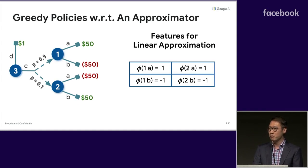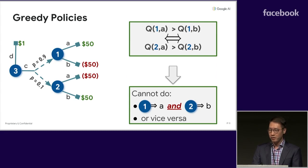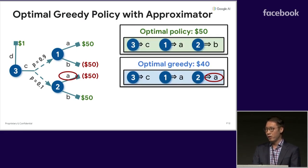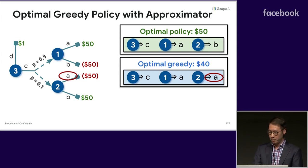Now suppose that we want to use linear function approximation with the following featurization. It turns out that there's no set of parameter values that would assign a higher Q value to action A in state one compared to B. That is, there's no greedy policy that can execute A in one state and B at the other. This means that all greedy policies have to execute A in both states or B in both states. So the optimal greedy policy takes action C and takes action A wherever you end up, giving a value of 40, which is slightly below that of the optimal policy.